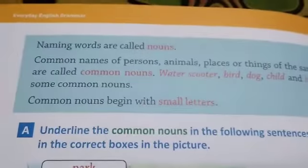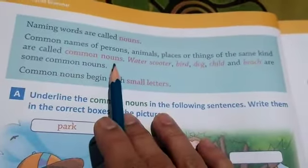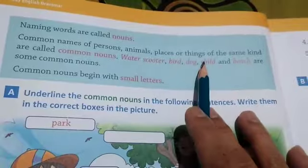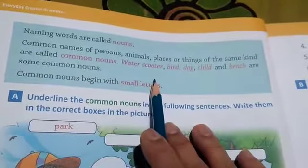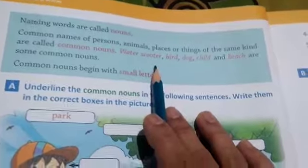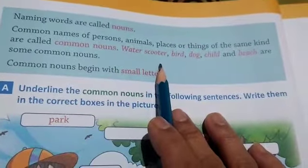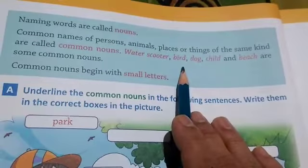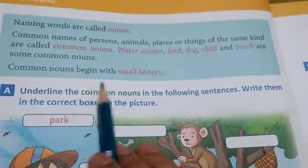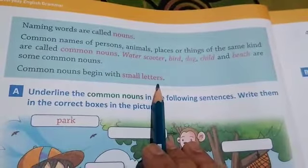Now I am going to explain naming words. Naming words are called nouns. In that, there are two types of naming words — common noun and proper noun. Now we are going to learn common noun. Common names of persons, animals, places, or things of the same kind are called common nouns. For example: tree, bird, animal — these are called common nouns. Common nouns always begin with small letters.